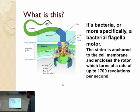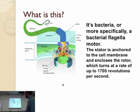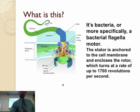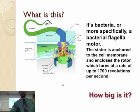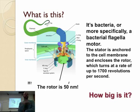They used to say man invented the wheel — well, biology invented the wheel. It's a bacterium, more specifically a bacterial flagella motor. The stator is anchored to the cell membrane and drives the rotor, which turns at 1,700 revolutions per second — that's a pretty good motor, and it's small. The rotor is 50 nanometers. Compare that to the cantilever, which was 50 microns. How many orders of magnitude smaller is this?